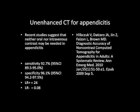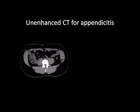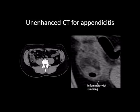Examine this patient's CT performed without oral or IV contrast. In the patient's right lower quadrant, there is inflammatory fat stranding surrounding an abnormal appendix. The psoas muscle is visible, and the fat plane that normally separates the cecum and psoas muscle is obscured. Compare with the normal fat plane surrounding the psoas muscle on the opposite normal side, and also compare with normal subcutaneous fat. Normal fat appears black because of its low density.